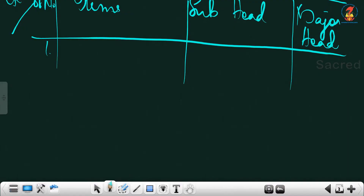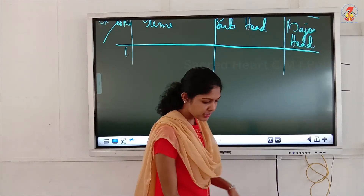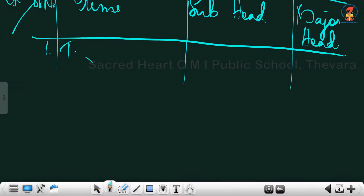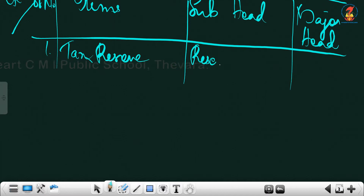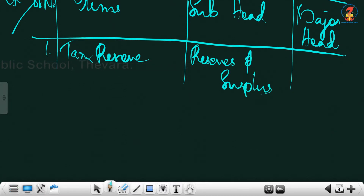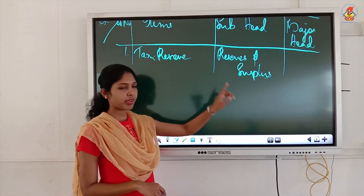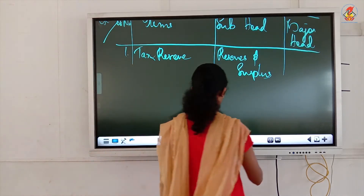Illustration 25. First item: tax reserve. Since it is a reserve, the subhead is reserves and surplus and the major head is shareholders' fund. Important: do not reverse the subhead and major head. If you write shareholders' fund under subhead and reserves and surplus under major head, you will not get any marks. Make sure you write according to the correct heading.